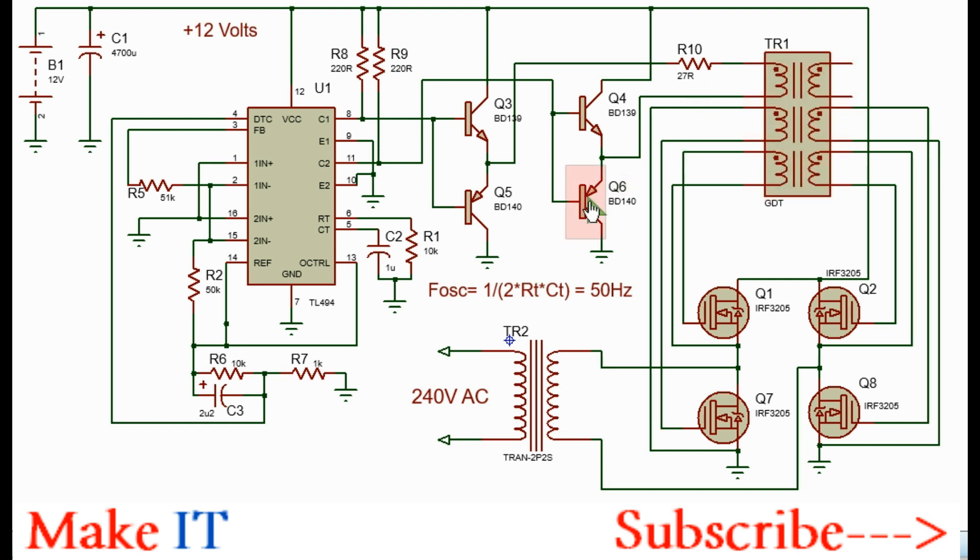And through the second transistor which is BD-140. Because it's PNP it will be on when pin 11 will be low. When the opposite happens, that is pin 11 is high and pin 8 is low.